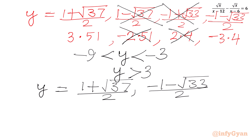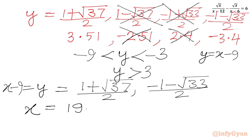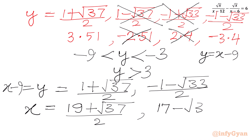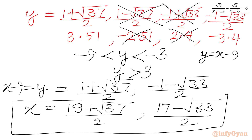Now substituting back using y equal to x minus 9, to find x we add 9 to both accepted y values. So we get x equal to (19 plus square root 37) over 2 and x equal to (17 minus square root 33) over 2. These are the only accepted solutions for our given rational equation.